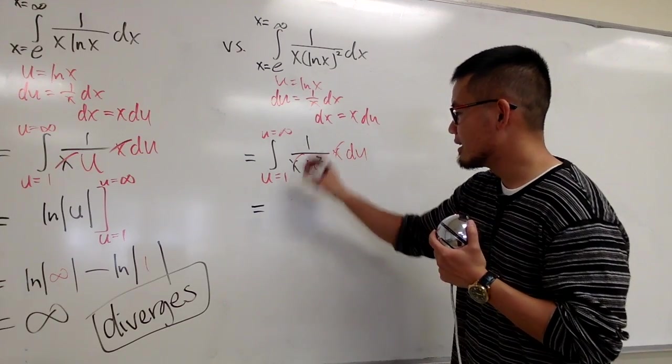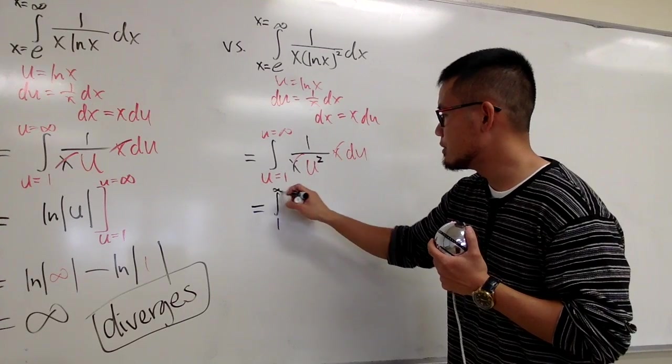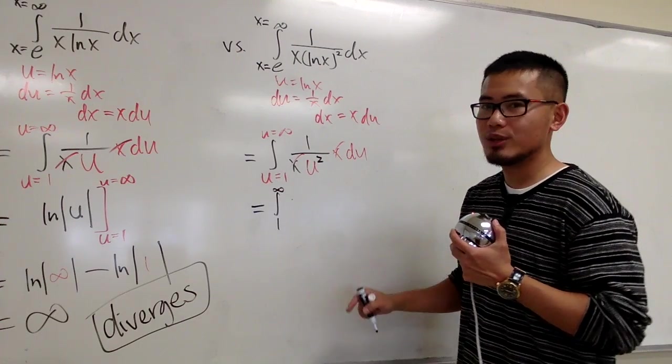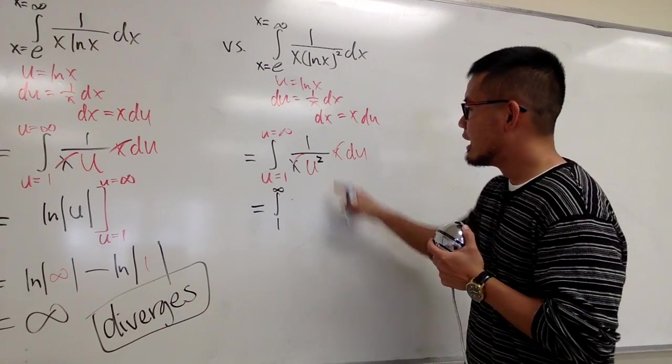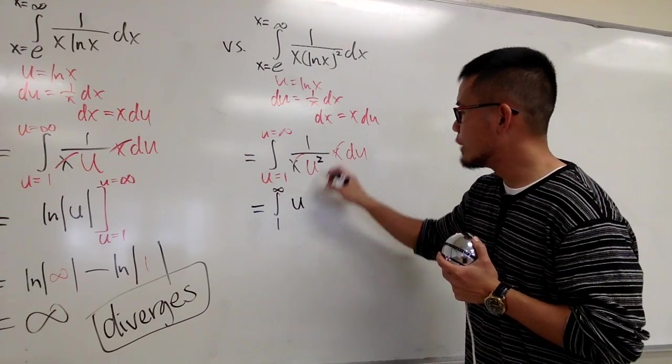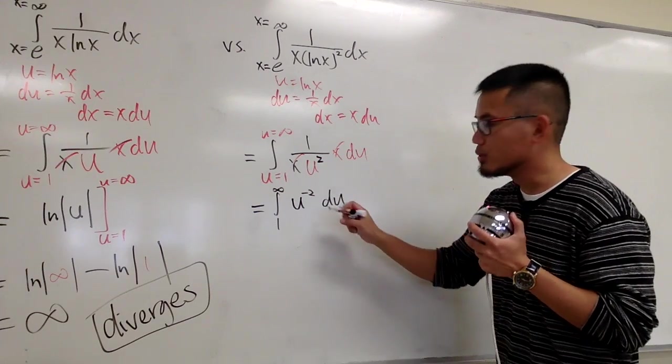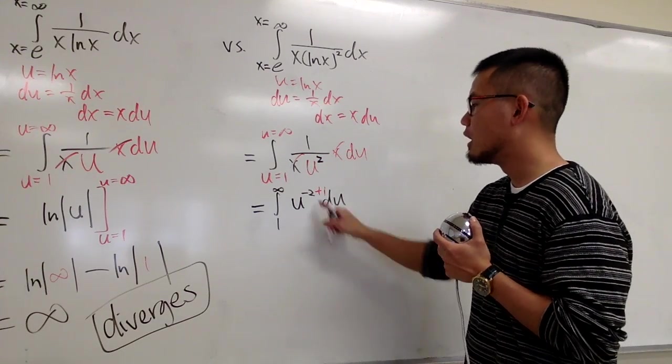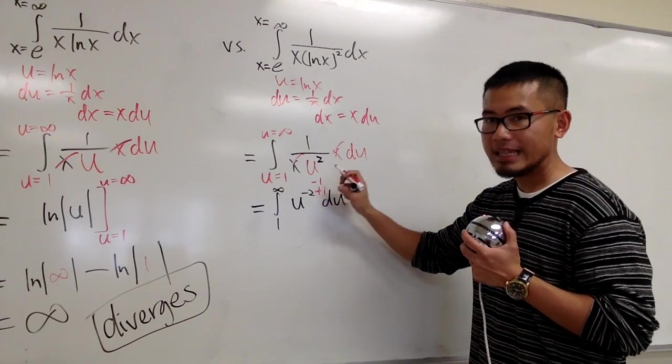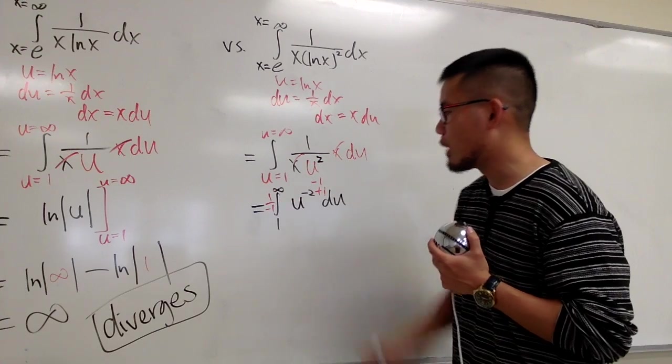Let me just put on one more line. This is going to be integral, u goes from 1 to infinity. I don't want to write down u anymore. You should know that already. And we'll finish everything in u world. Let me just change this to u raised to the negative 2. And then we still have the du. So that I can use the power rule, but backwards. I will add one first. Negative 2 plus 1 is negative 1. And then I will divide it by this new exponent, which I'll put this down as 1 over negative 1.